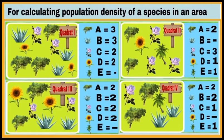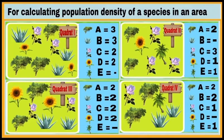Four quadrats have been prepared in the field. For calculating population density of a species in this area, count the number of individuals of each species in each quadrat. For example, in quadrat number one: species A has 3 individuals, species B has 3, species C has 2, species D has 2, and there is no individual of species E. Similarly, count the number of individuals of each species in quadrats two, three, and four.